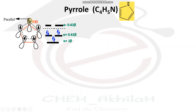The nitrogen in pyrrole is sp2 hybridized, and the ring has five p orbitals that can overlap to create five new orbitals — three bonding orbitals and two anti-bonding orbitals. Overall, six electrons are present. These electrons in the parallel orbitals take part in the pi cloud, forming an aromatic sextet. That is the molecular orbital diagram of pyrrole.